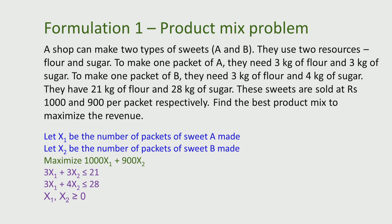To make one packet of A, they need 3 kg of flour and 3 kg of sugar. To make one packet of B, they need 3 kg of flour and 4 kg of sugar. They have 21 kg of flour and 28 kg of sugar. These sweets when made are sold at rupees 1000 and 900 per packet respectively. Find the best product mix to maximize the revenue generated by the shop.